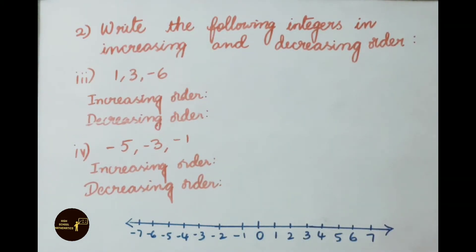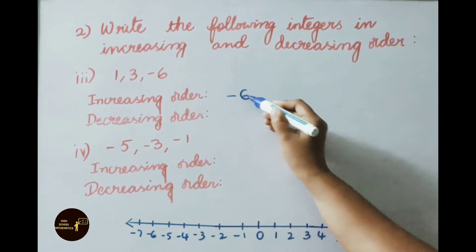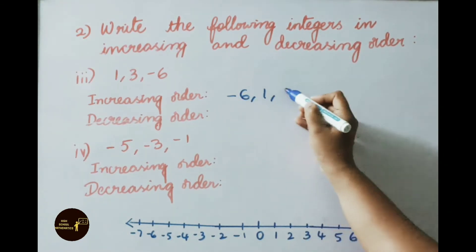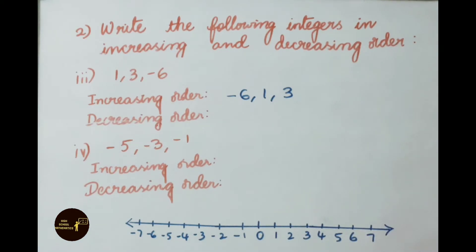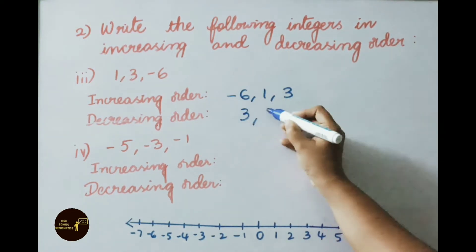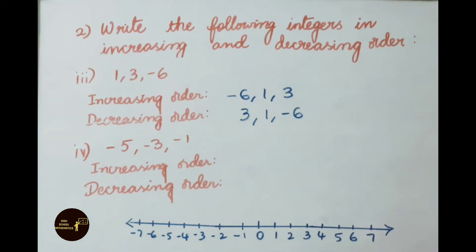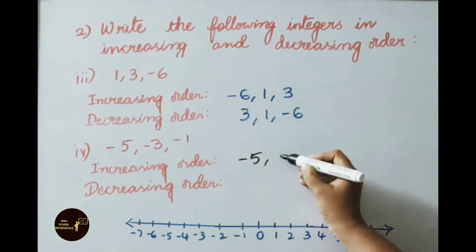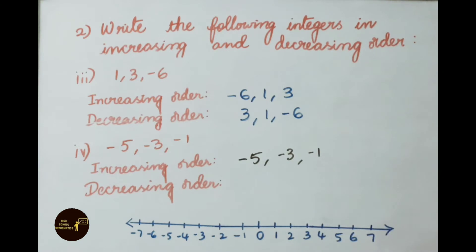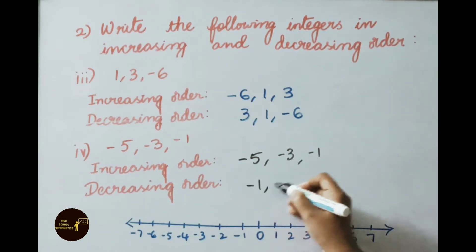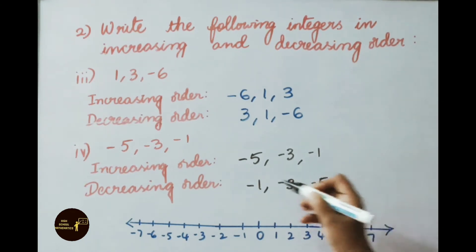Third set: 1, 3, and minus 6. Arranging in increasing order using the number line — we get minus 6 first, then 1, then 3. The decreasing order is: 3, 1, and minus 6. Fourth set: minus 5, minus 3, minus 1. Increasing order: minus 5, minus 3, minus 1. Decreasing order: minus 1, minus 3, and minus 5.